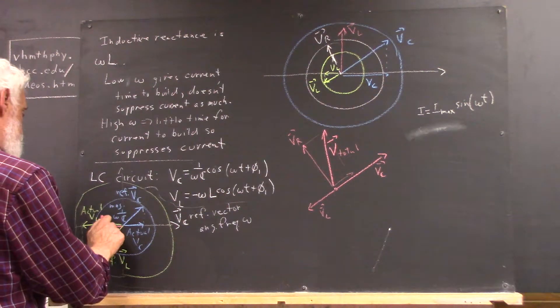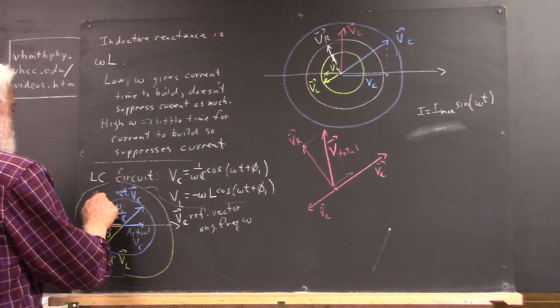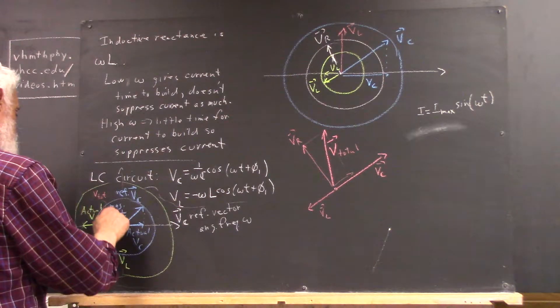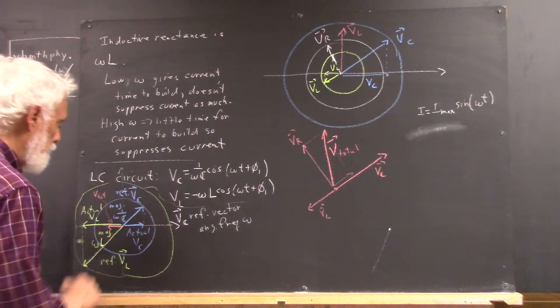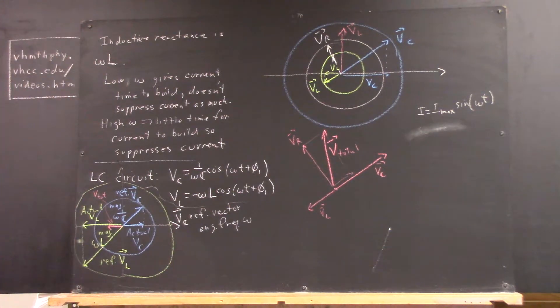So, let's see. This is, I'll have to write it up here and draw an arrow. This is V total. This arrow here represents your total voltage.